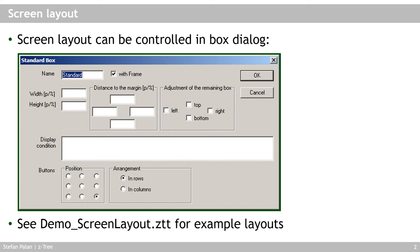It's like the box is invisible. Finally, you can tell z-Tree where to position the buttons. By default they will be put in the lower right of the screen, arranged in rows — the first button at the bottom right, the next to its left, and so on, until a new row is started. Usually you don't need to change this, but you can. On the next slide I'll show a demo of the screen layout from the course materials.